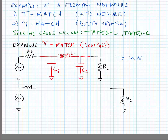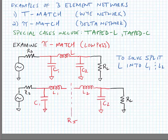We're going to start by examining our pi match in a low-pass configuration. A low-pass configuration means there is an inductor in series between the source and load terminations. To solve this network we're going to split L into L1 and L2. We've virtually split L into virtual inductances L1 and L2, giving us two independent matching networks: RS being transformed down to an intermediate impedance, and RL being transformed down to intermediate impedance through the respective low-pass networks.